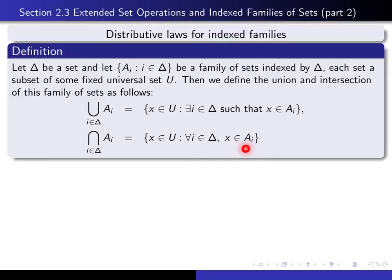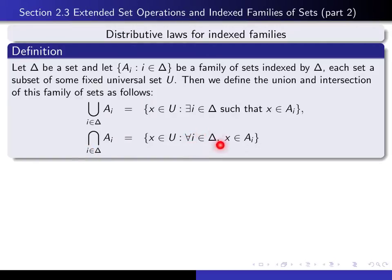To say that x is an element of the union simply means there exists an i in the indexing set such that x is in a sub i — that is the working definition of union. And to say that x is in the intersection of all of the sets means that for every i in our indexing set, x is in a sub i. That is the working definition of membership in the intersection.